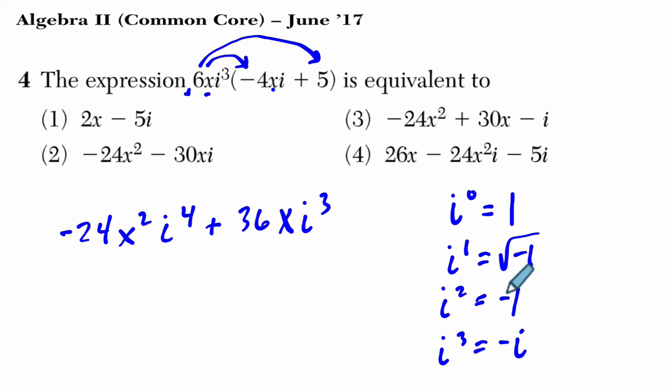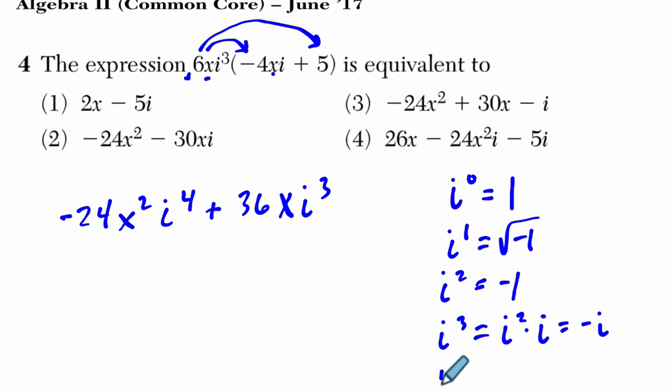Right? Just the previous, we already had i², and then times another i is -i. Let me write that out, actually. So i³ equals the same thing as i² times i. And i² is already -1, so it's -1 times i, which is -i. And then i⁴...